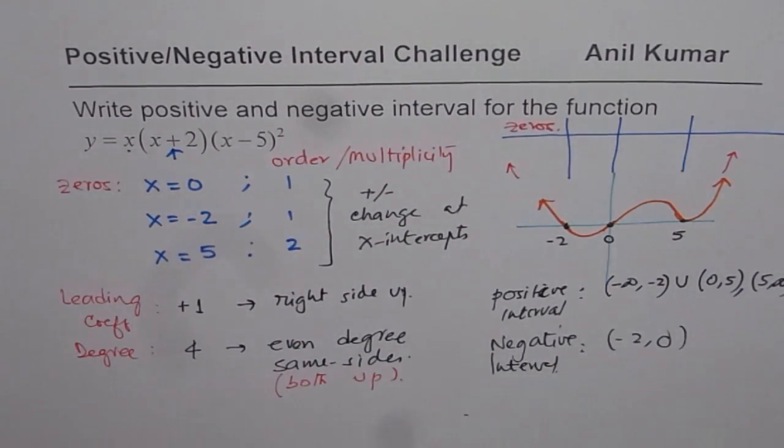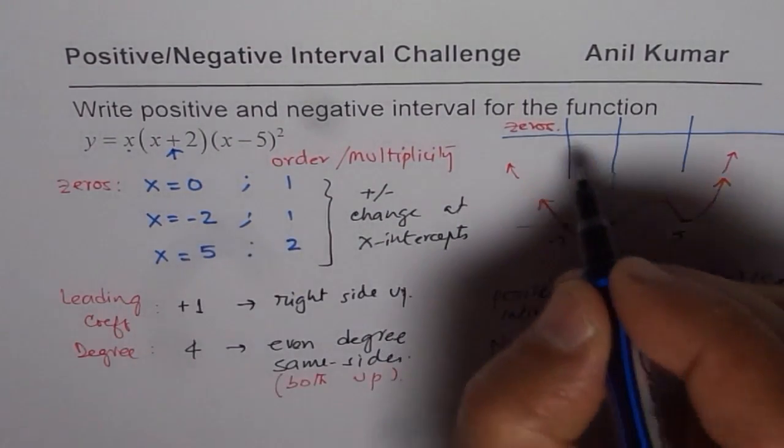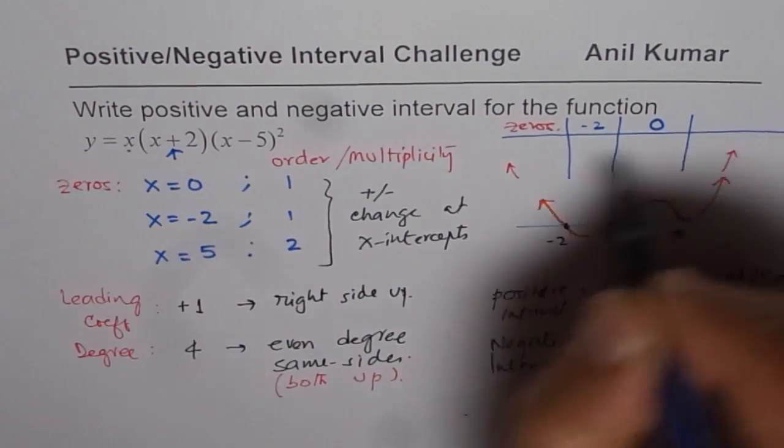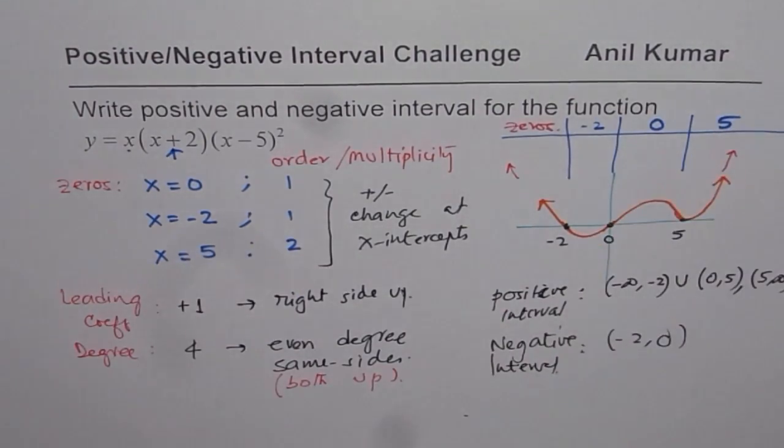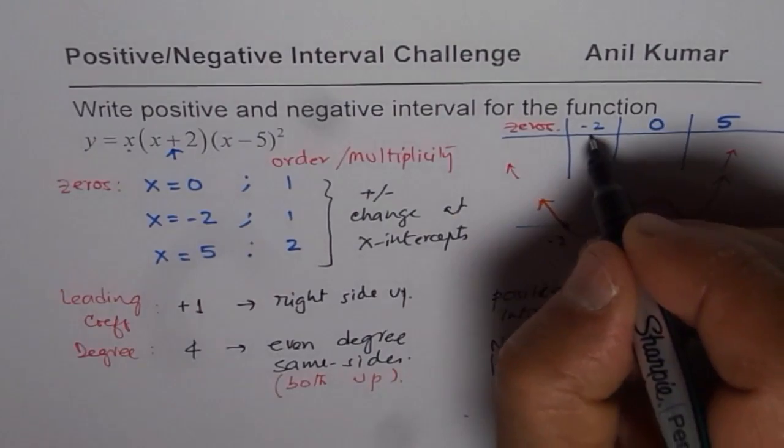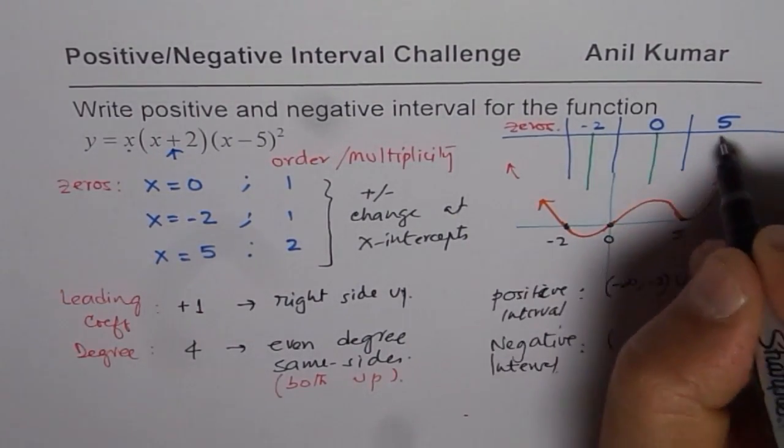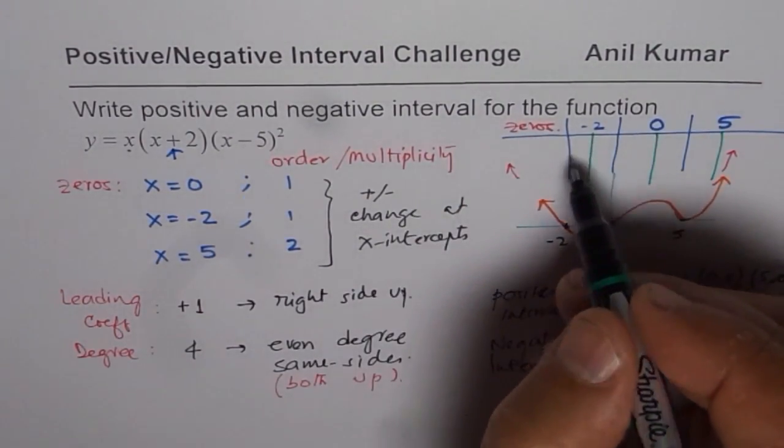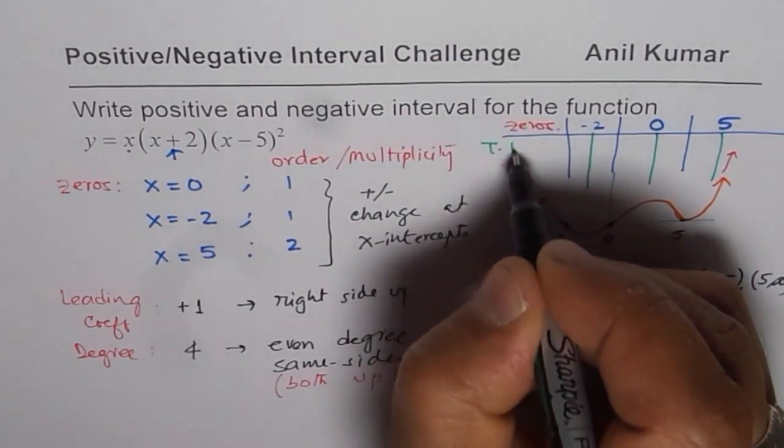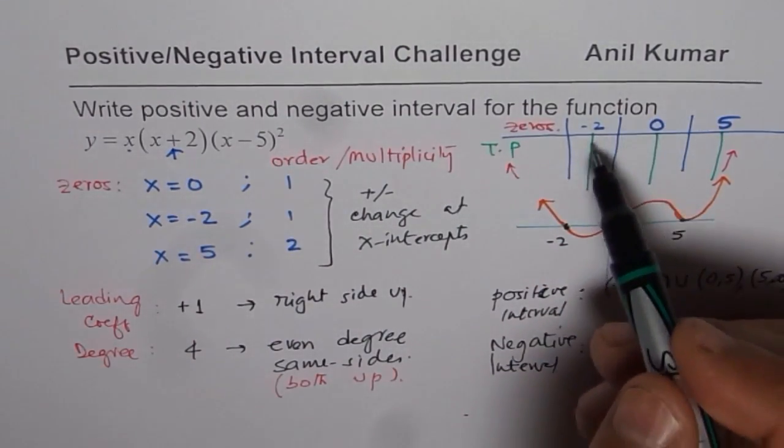So write down all your zeros on the table. So in our case, we have zeros at minus 2, 0, and 5. Now on either side of these zeros, you substitute a value and test. So take a test point. So use a test point. For example, minus 2.